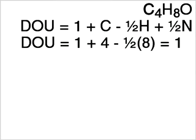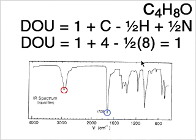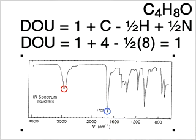What we can do is take a look at the IR. So here's the IR, and what we see is at 1700, a strong absorption. This type of absorption indicates a carbonyl group, and a carbonyl group has one pi bond, and that accounts for our one degree of unsaturation.